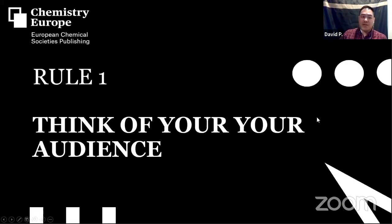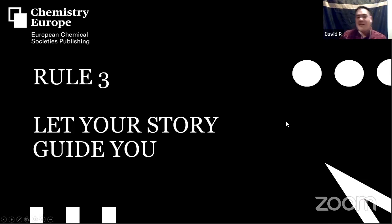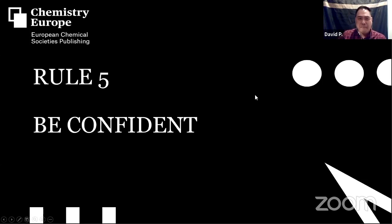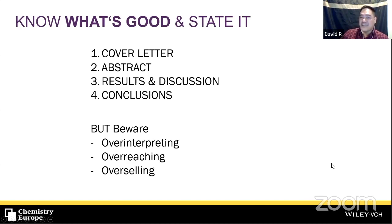Rule one: think of your audience. Rule two: KISS. Rule three: let your story guide you. Rule four: please your readers. Rule five is simple — one slide: be confident. Know what's good about your study and state it. Make it explicit in your cover letter, abstract, results, discussion, and conclusions. But be aware of over-interpreting your results, over-reaching your conclusions, and over-selling your work. Sensationalist academic writing is not good, and your editors and referees will call you out on that.